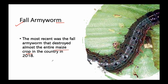As a result, in 2019, India had to import maize from other countries because it was completely damaged. You can see a picture of the fall armyworm - this is what it looks like.